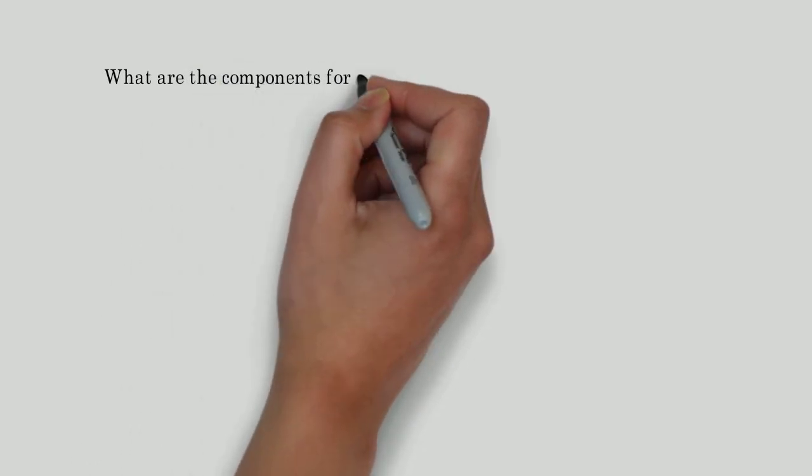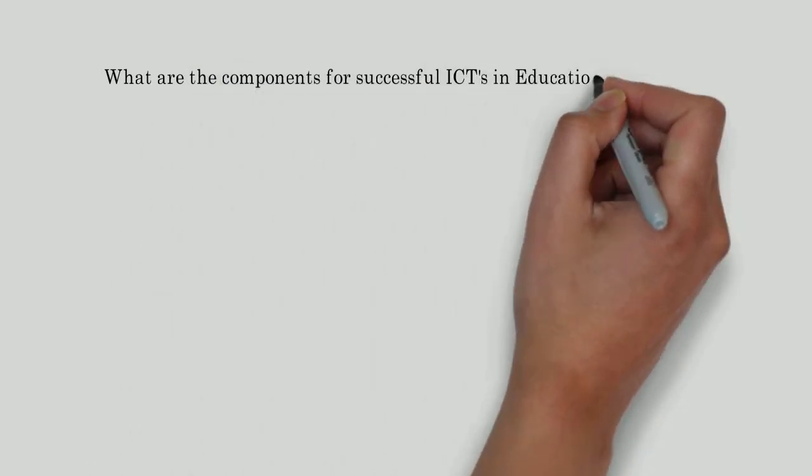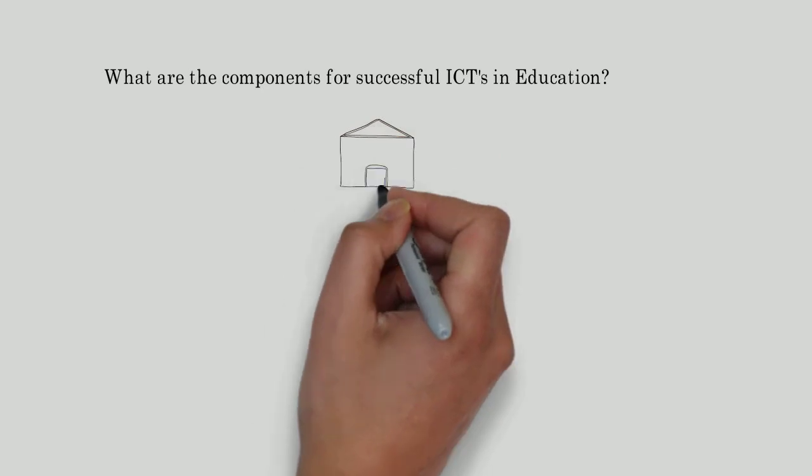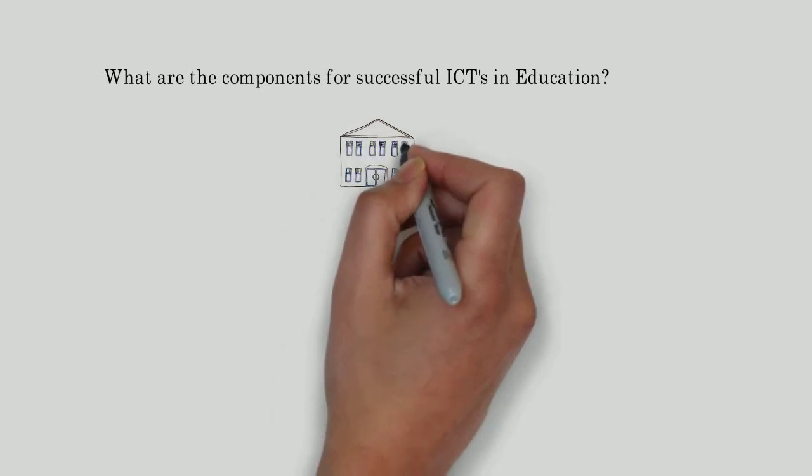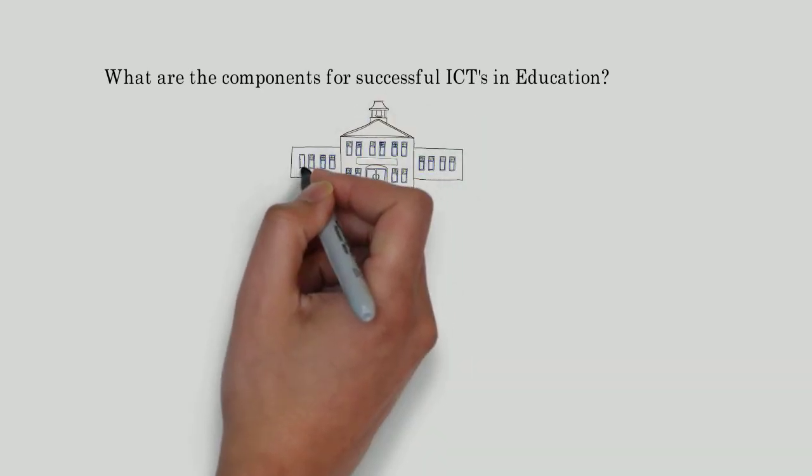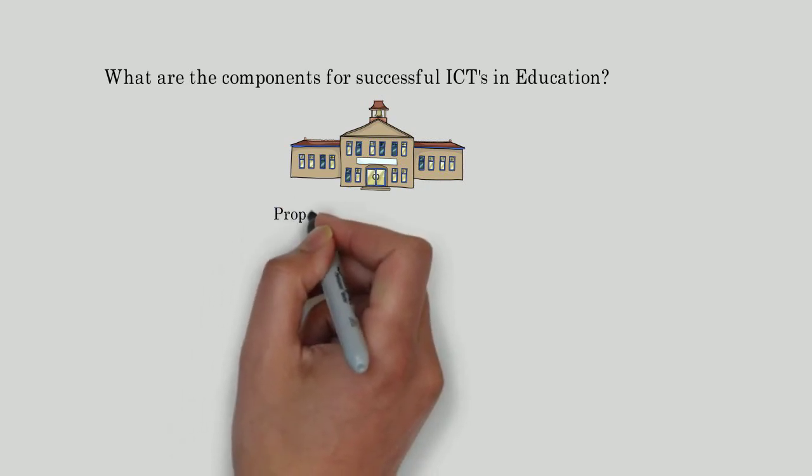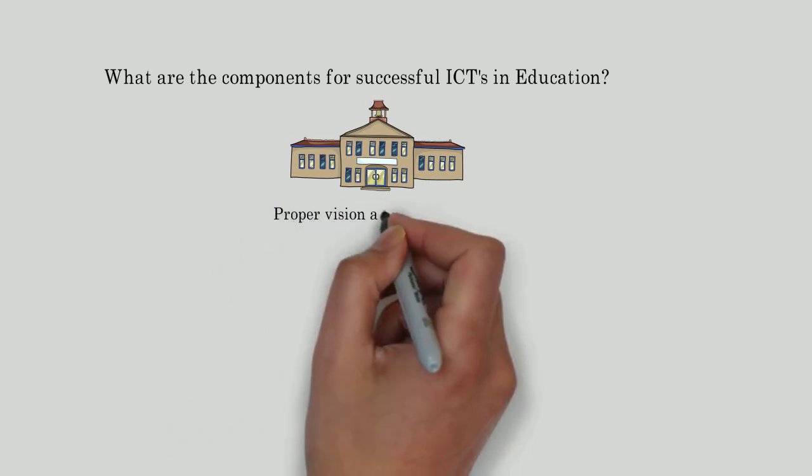What are the components for successful ICTs in education? Without proper vision and leadership, we can expect failure. This has happened to many organizations where the wrong person was put in charge or simply did not care.